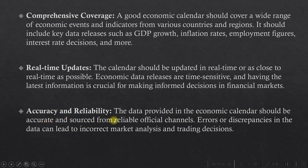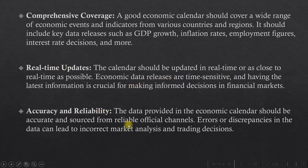Accuracy and reliability: the data provided in the economic calendar should be accurate and sourced from reliable official channels. Errors and discrepancies can lead to incorrect market analysis and trading decisions. For example, if the actual NFP number is 250,000 jobs added for the US in June, but your calendar shows 150,000 and shows it late, that's really bad — especially if you've already told people that figure. So you need an economic calendar that is accurate, reliable, and releases info on time.